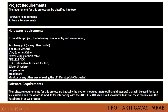We need an LDR — this is optional. We need a 10K or 1K resistor. Here I am going to use a potentiometer. We need jumper wires, a breadboard, and a monitor. I am going to use my laptop screen to extend the display of the Raspberry Pi microcontroller.